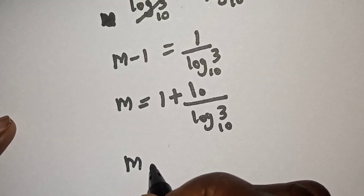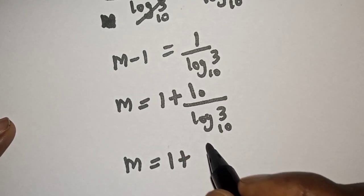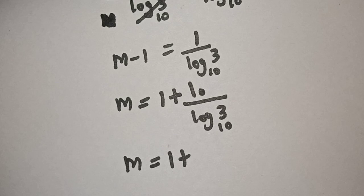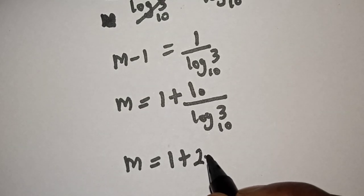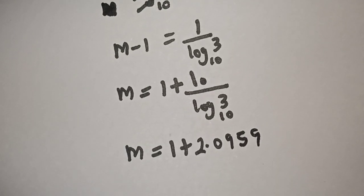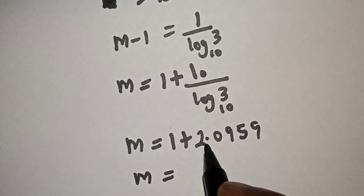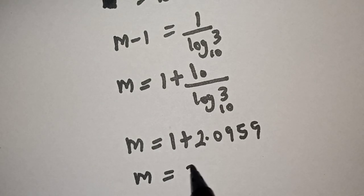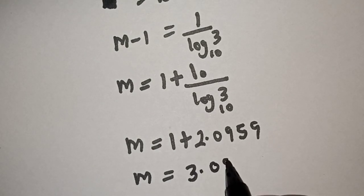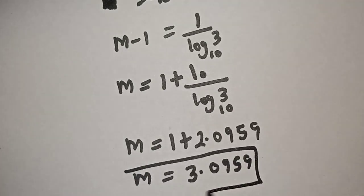Then m is equal to 1 plus 1 over log 3 base 10, which is 2.0959. Then m is equal to 1 plus 2.0959, that is 3.0959. And this is the final answer.